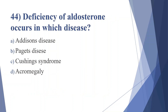Forty-fourth question: deficiency of aldosterone occurs in which disease? Option A: Addison's disease, option B: Baguette's disease, option C: Cushing's syndrome, option D: acromegaly. Answer is option A, Addison's disease.